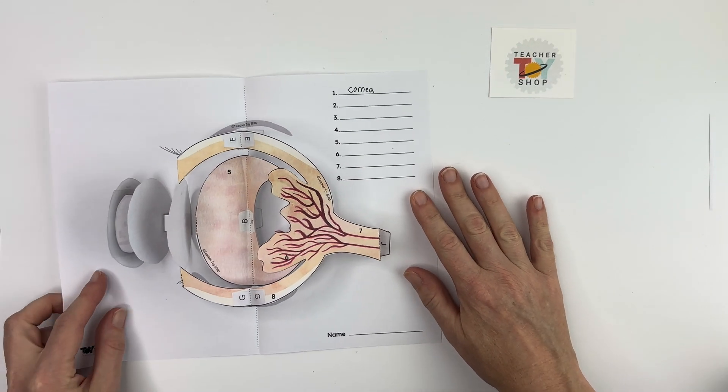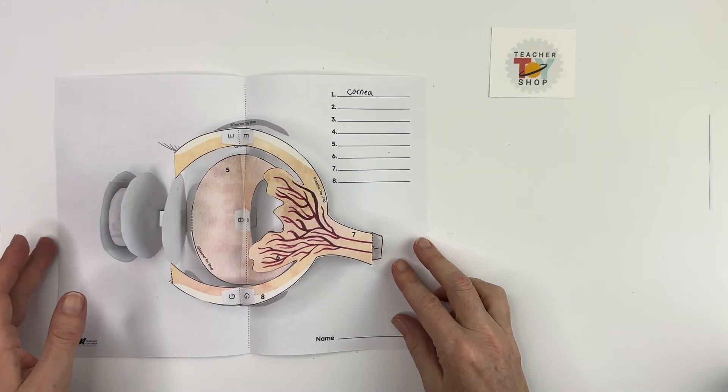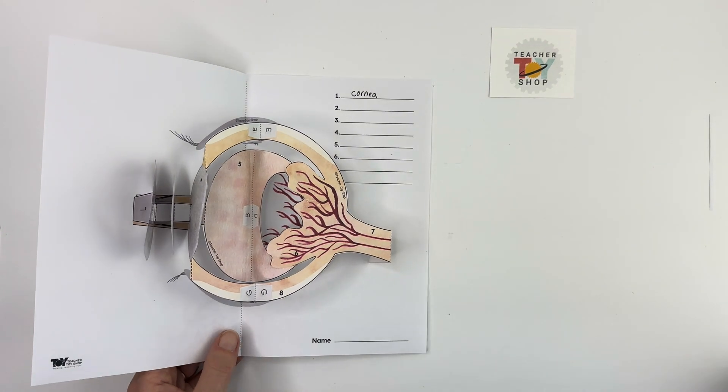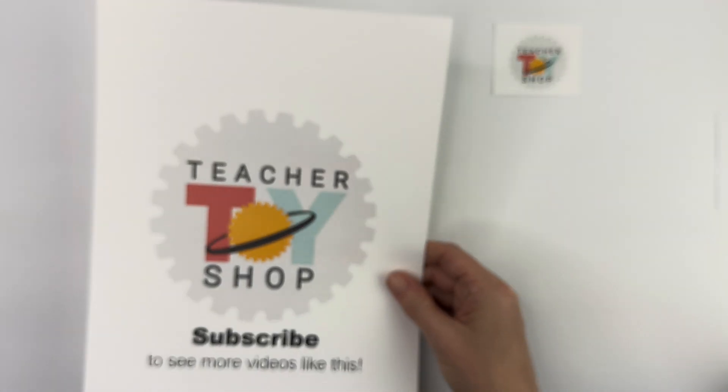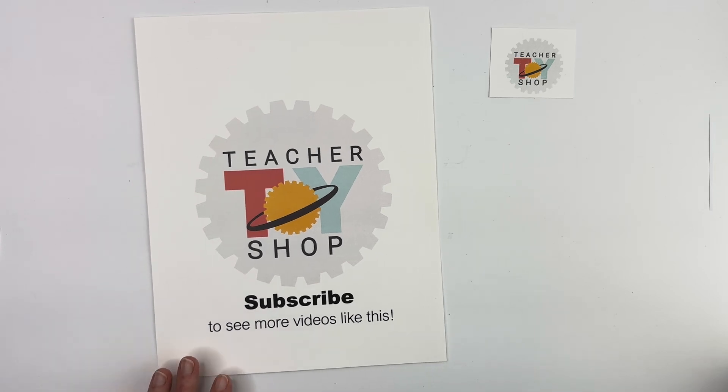So again when you're finished this is a pop-up eye so you should be able to open and close it. You can glue the back here into your notebook and use this as a study sheet if you like. So Teacher Toy Shop has lots of videos on how to make cool science things out of paper like this as well as other science experiments. So if you're interested please subscribe to see more videos like this, thank you.